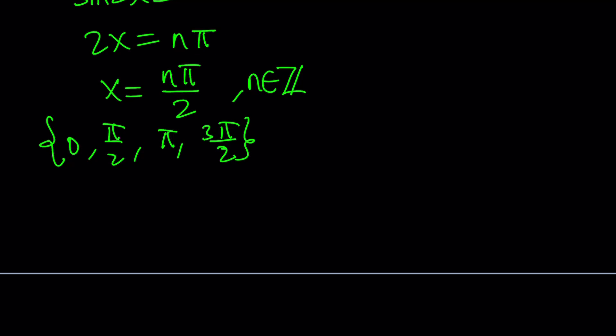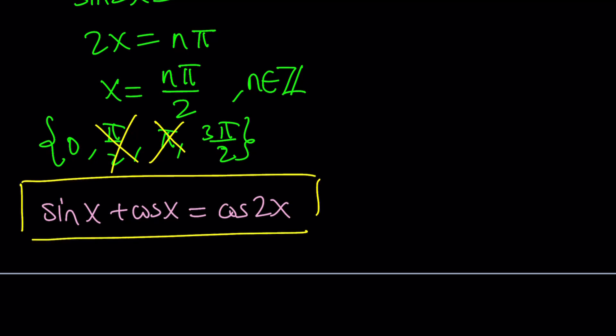So what are we supposed to do? We're supposed to check them with the original equation. So let's go ahead and plug these into the original equation. And you'll soon realize that 0 and 3 pi over 2 work, but pi over 2 and pi do not satisfy the original equation, which is this one. Make sense? So we have to discard them.